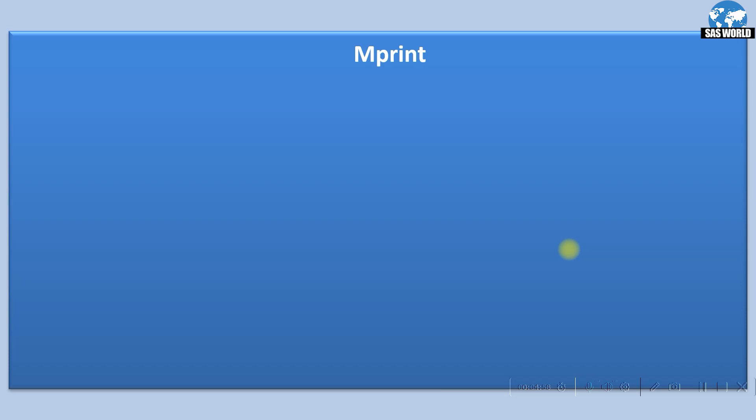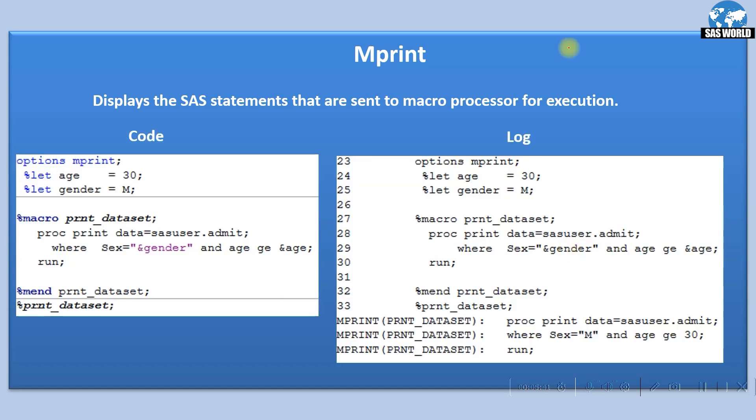The second option is mprint. Mprint displays the SAS statements that are sent to macro processor for execution. SAS macro is a separate functionality. When we write a macro in SAS, those statements are sent to SAS macro processor and that macro processor executes those statements. If you want to see what all statements a macro has sent to macro processor, you can print those statements in SAS log.